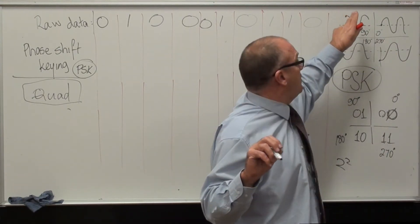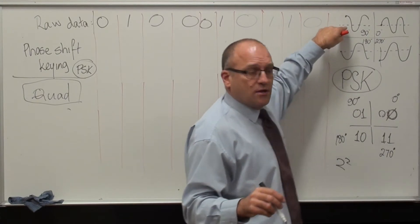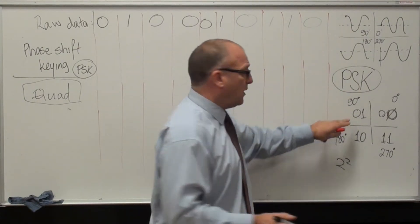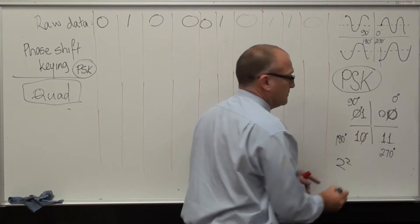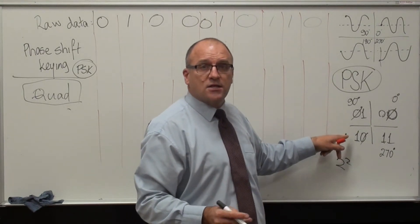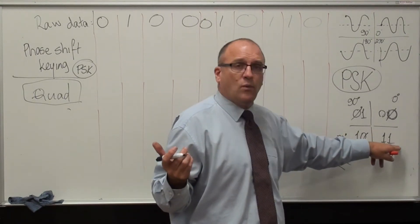If it starts at 90 degrees, it tells the computer it's 0, 1. If it starts at 180 degrees, it tells the computer at the other end it's 1, 0. And 270 degrees is 1, 1.